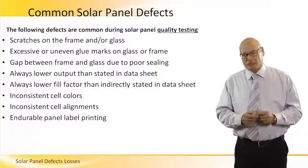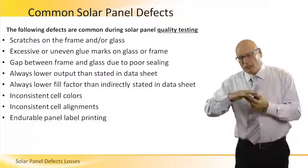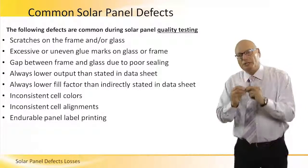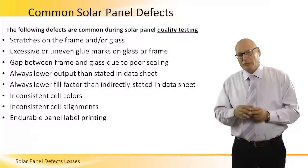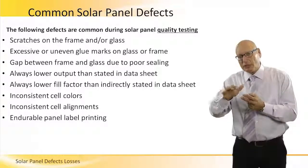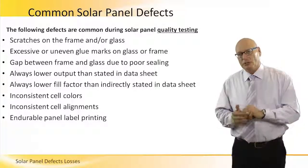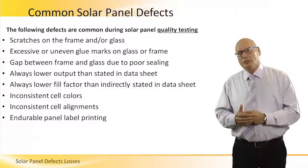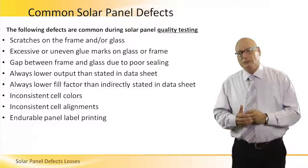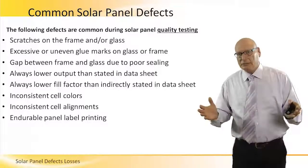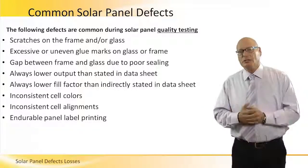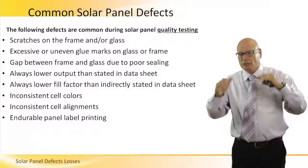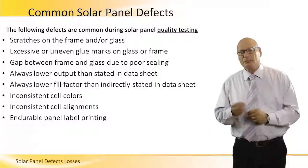Inconsistent cell colors — polycrystalline and monocrystalline cells have their own natural colors. If there is a different color, something is wrong. Too much oxidation or rust will change the color of the cell and the silicon itself, reducing its performance.